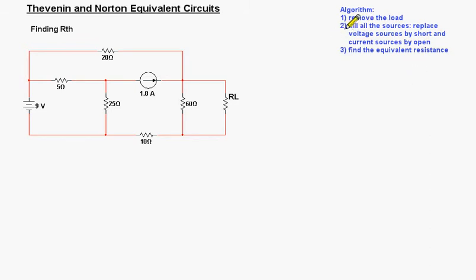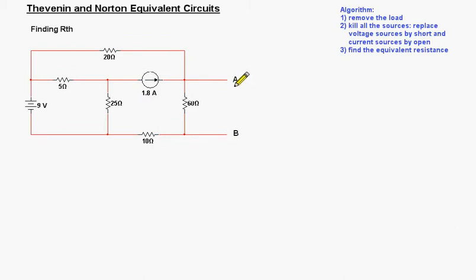First step, we are going to remove the load so we don't have the load anymore, just the connection points A and B. The next step, we kill all the sources. We replace voltage sources by short and current sources by open.